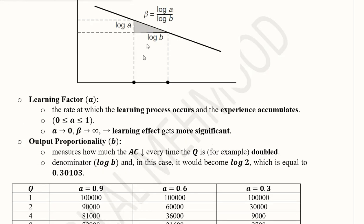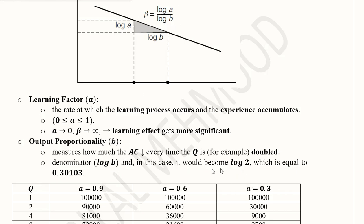The output proportionality factor 'b' measures how much the average cost will decline every time output is made manifold. For example, if we double the output, b = 2, then the denominator becomes log(2) which equals 0.30103. We can remember this value for calculations.